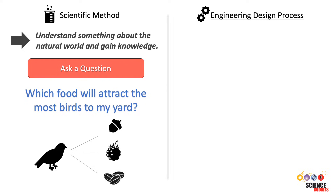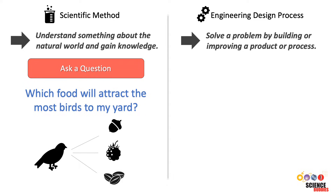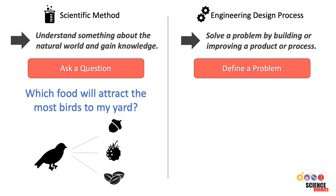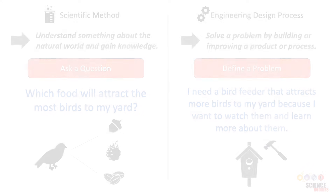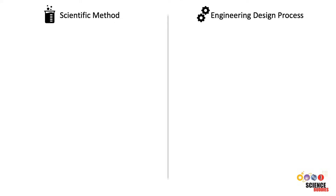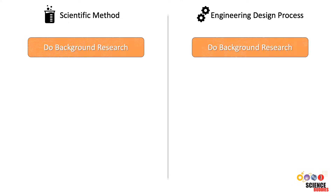When using the engineering design process, the goal is to solve a problem by building or improving a product or process. It starts by defining the problem. For our bird watching example, the problem statement might be: I need a bird feeder that attracts more birds to my yard because I want to watch them and learn more about them.